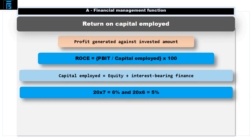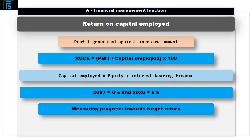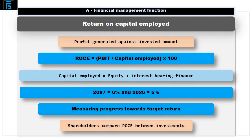Here you can see the 20x7 and 20x6 return on capital employed. For every $1 invested, the shareholders are getting back about 6% in 20x7 and 5% in 20x6. The increase is a good indicator. The organisation will use this ratio to assess their efficiency at converting revenues into returns for their investors and to measure their progress towards their target return. They can also benchmark against other organisations in their industry. Shareholders will look at the return offered at Top Dog and what risk-free investments are offering and the returns offered by other companies.